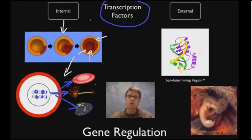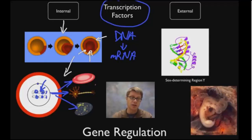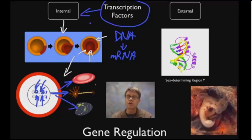What are those cues? We call those transcription factors. Transcription is the process where we go from DNA to RNA, so a transcription factor is a protein or chemical that causes DNA to make a transcript of itself — in other words, make messenger RNA. Transcription factors are chemicals in the cell that say turn that gene on, turn that on. This would be an example in a eukaryotic cell. Transcription factors can come internally but they can also come externally.